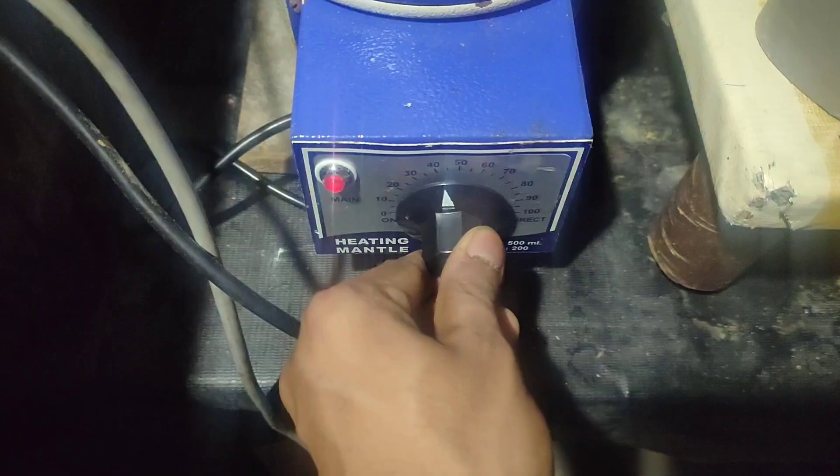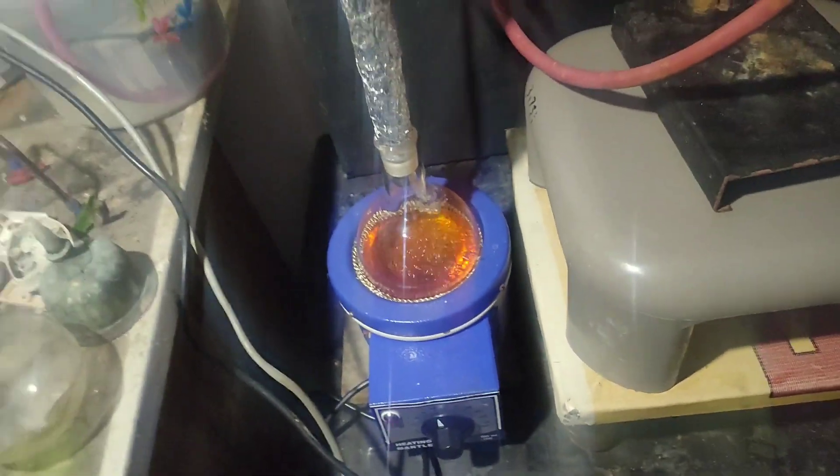The temperature went to 85 degree celsius and then it started coming down below 60. So I again increased the temperature of heating mantle and changed the receiver flask.